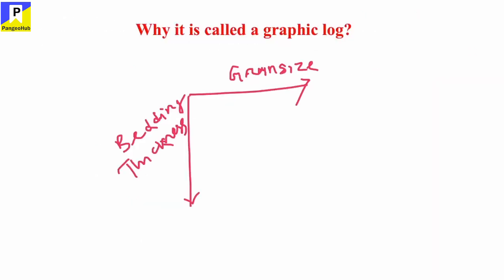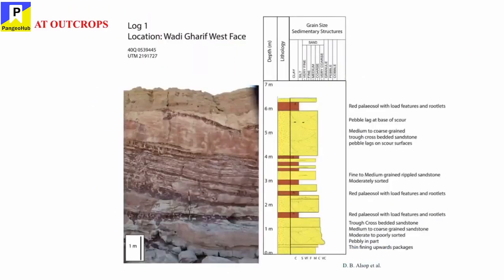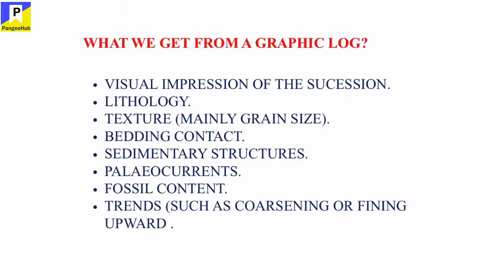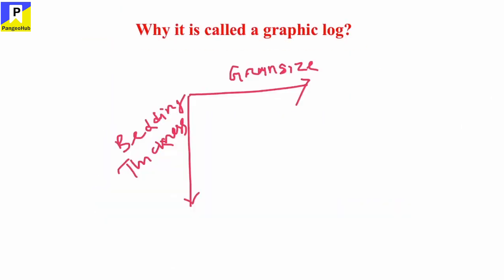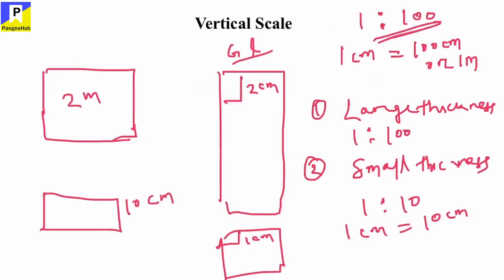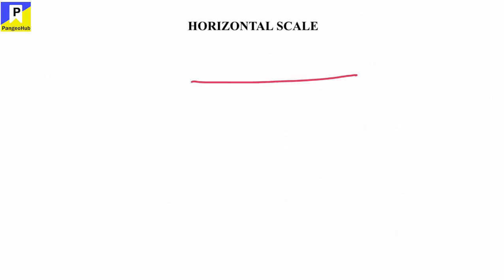We can see where the vertical scale is in this figure — this is the vertical scale. On the vertical scale, this is the bedding thickness, or it can be the depth. Now, horizontal scale: on the horizontal scale in a graphic log, the horizontal scale represents the grain size of the beds.